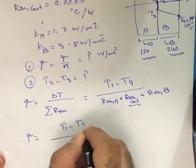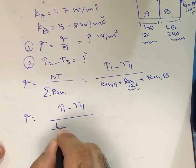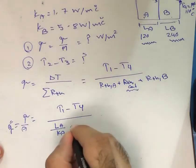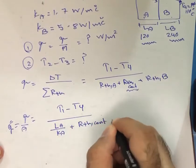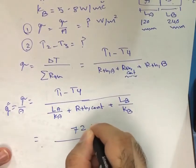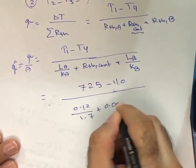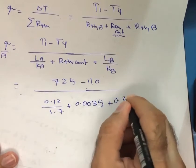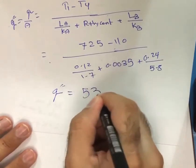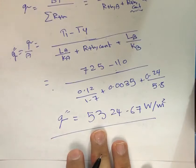It is now easy to find the heat flux, which is (T1 minus T4) divided by (L_A over k_A plus thermal contact resistance plus L_B over k_B). Substituting the numbers: denominator is 1.7 plus 0.0035 plus (0.24 divided by 5.8). The resulting heat flux is 5324.67 watts per meter squared.